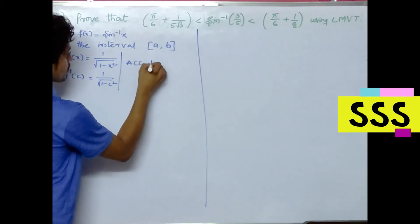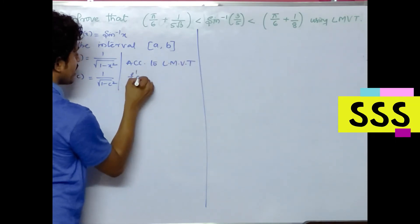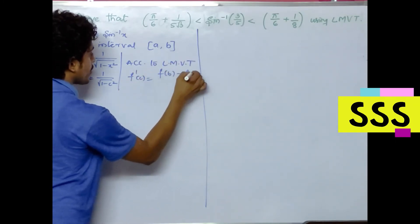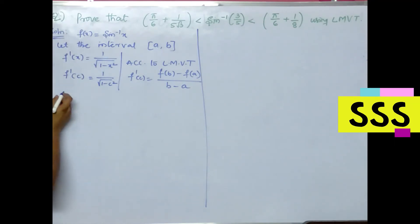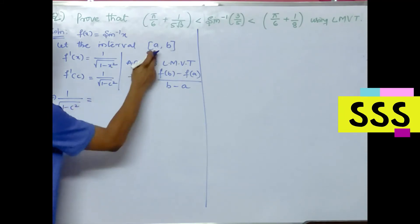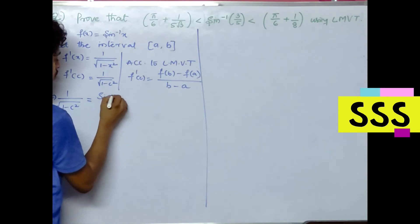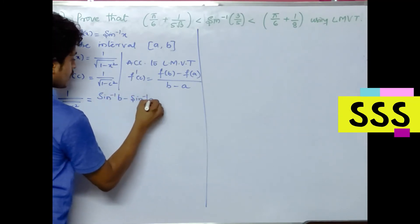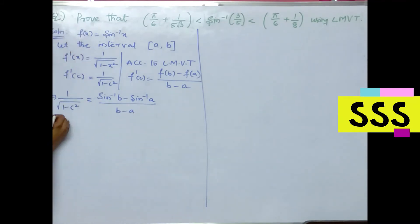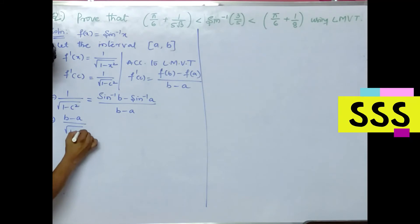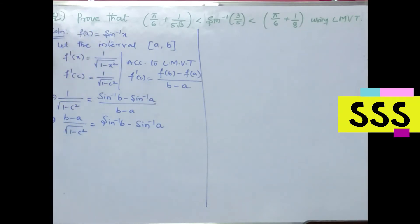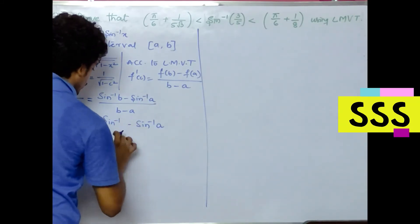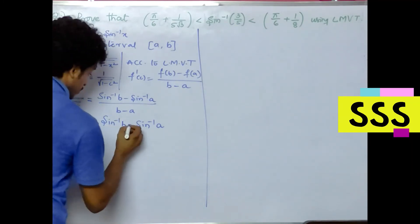According to Lagrange's Mean Value theorem, f'(c) = (f(b) − f(a)) / (b − a), so 1/√(1 − c²) = (sin⁻¹b − sin⁻¹a) / (b − a). Rearranging: (b − a) / √(1 − c²) = sin⁻¹b − sin⁻¹a.